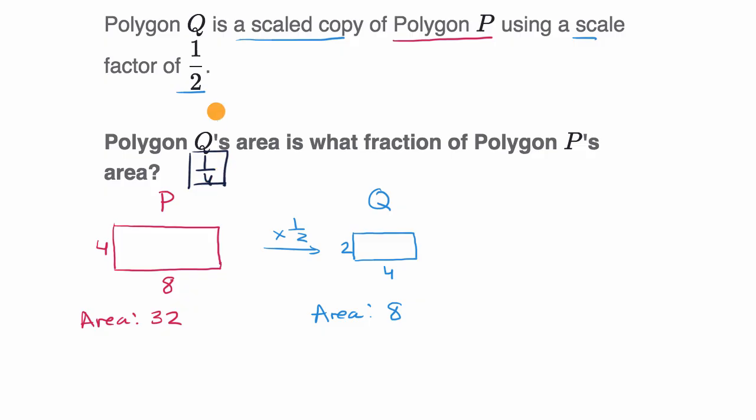And the big takeaway here is if you scale something, if you scale the sides of a figure by one half each, then the area is going to be the square of that. And so one half squared is one over four. If it was scaled by one third, then the area would be scaled, or the area would be one ninth. If you scaled by a factor of two, then our area would have grown by a factor of four.